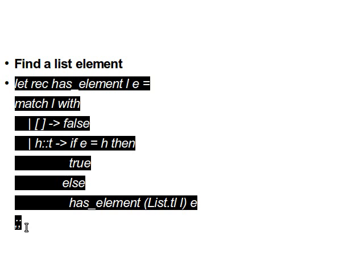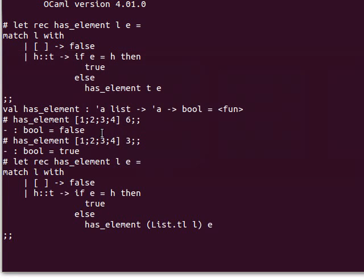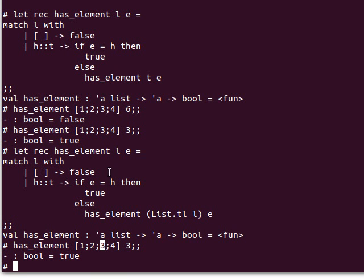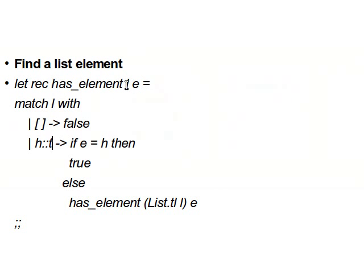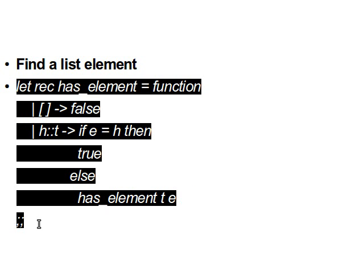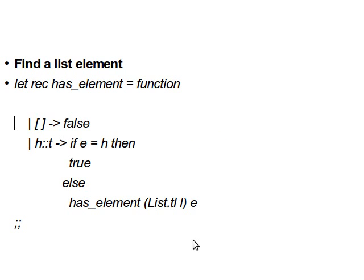Let me show the function using `List.tl` to take the tail of `l` — although as we said these two are equivalent. Calling it again returns true because we found element three. We can also transform this into the functional format: use `function` keyword, get rid of `match ... with`, and it should be exactly equivalent. Note that this alternate format is most convenient when we have only one argument.